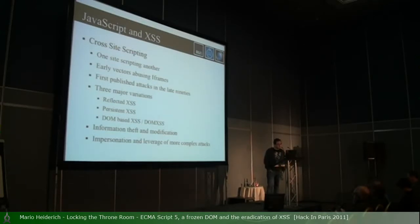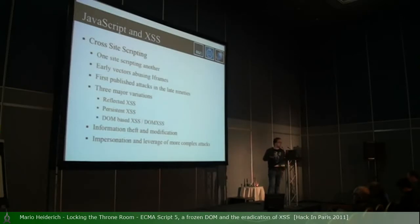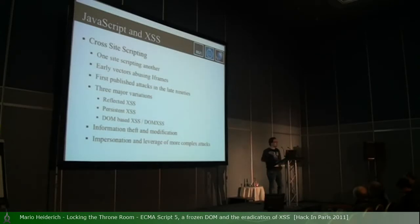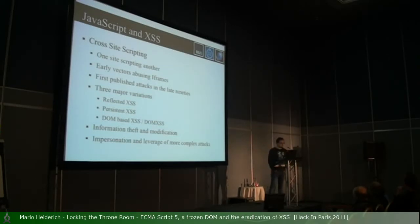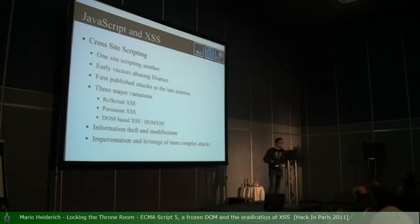XSS is usually used to conduct information theft, information modification, user impersonation, and sometimes to leverage more complex attacks. If you remember the attacks against Apache, it started with an XSS in Jira, their code versioning system, then was elevated to actual code access, code execution, and compromise of files on the web server — but it all started with an XSS.